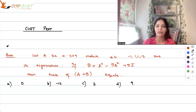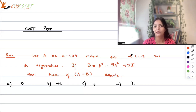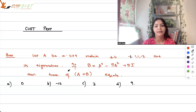The first question I'm discussing is from matrices. Let A be a 4×4 matrix such that -1, 1, 1, -2 are its eigenvalues. If B equals A to the power 4 minus 5A squared plus 5I, then the trace of A plus B equals.